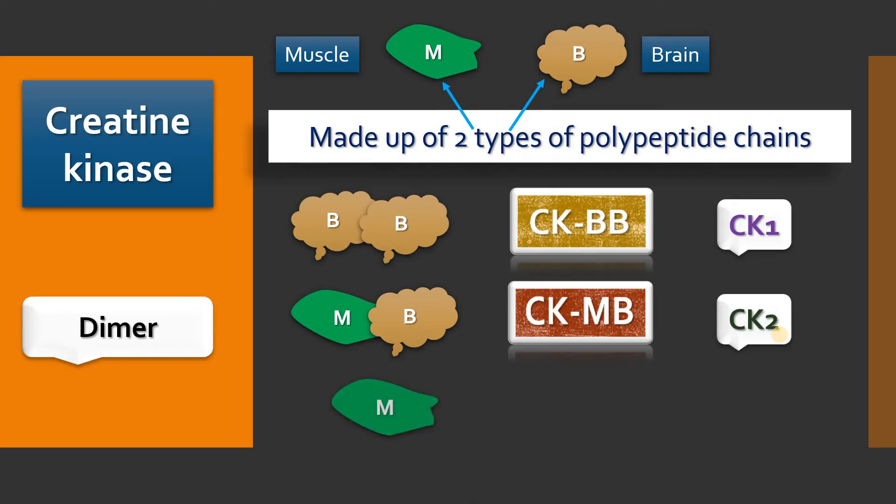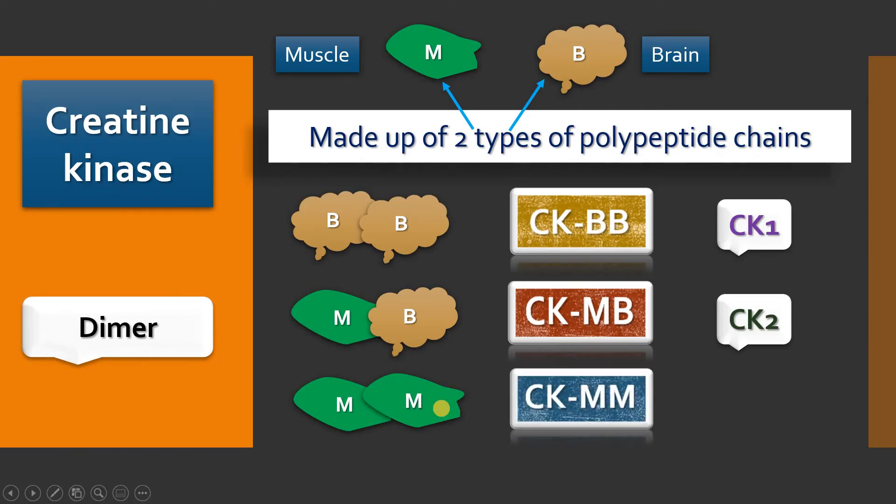Suppose two M subunits combined to form a dimer, such creatine kinase is called CKMM and it is predominant in skeletal muscles. This isoenzyme is called CK3. So we have three isoenzymes: CK1, CK2, CK3 or in other words CKBB, CKMB, CKMM.